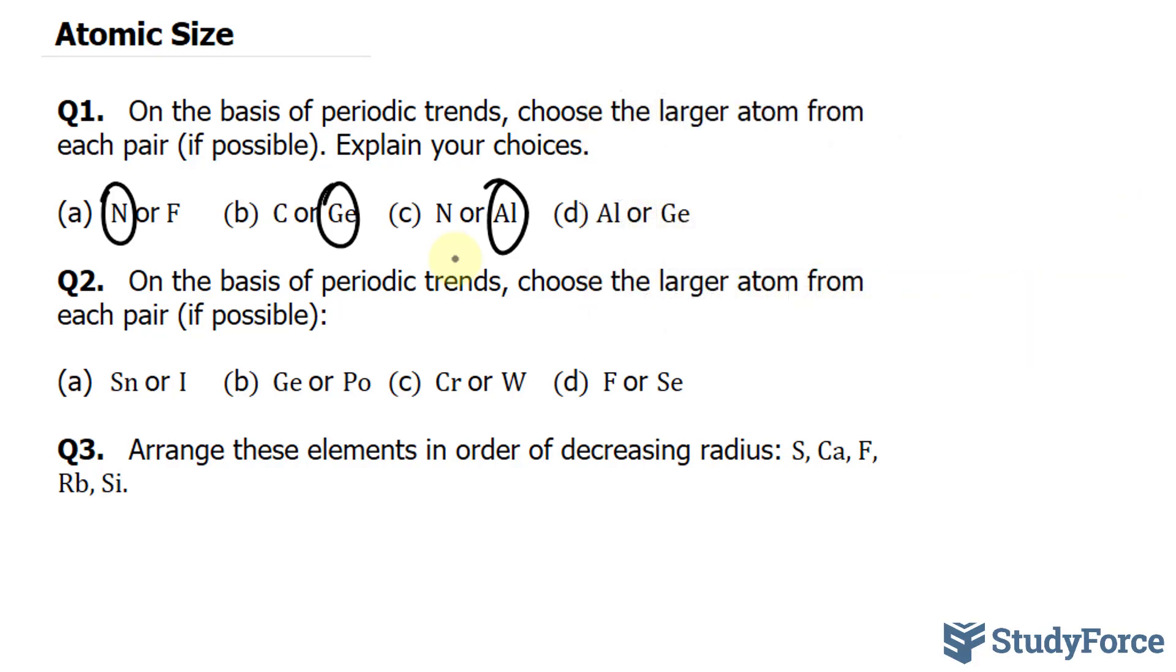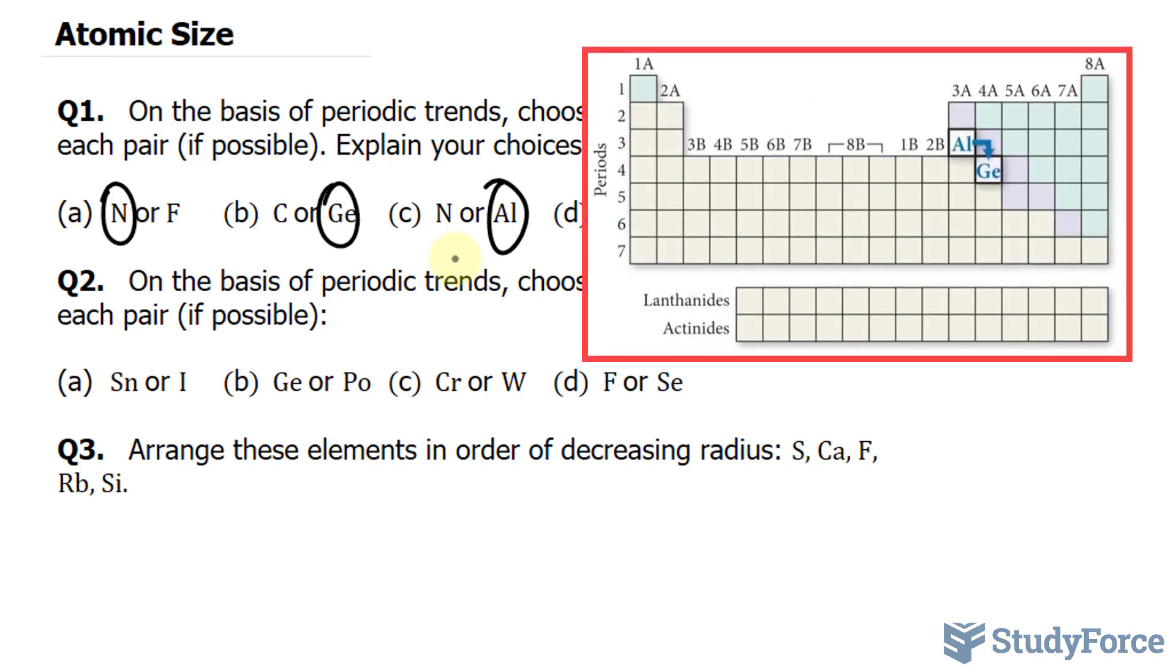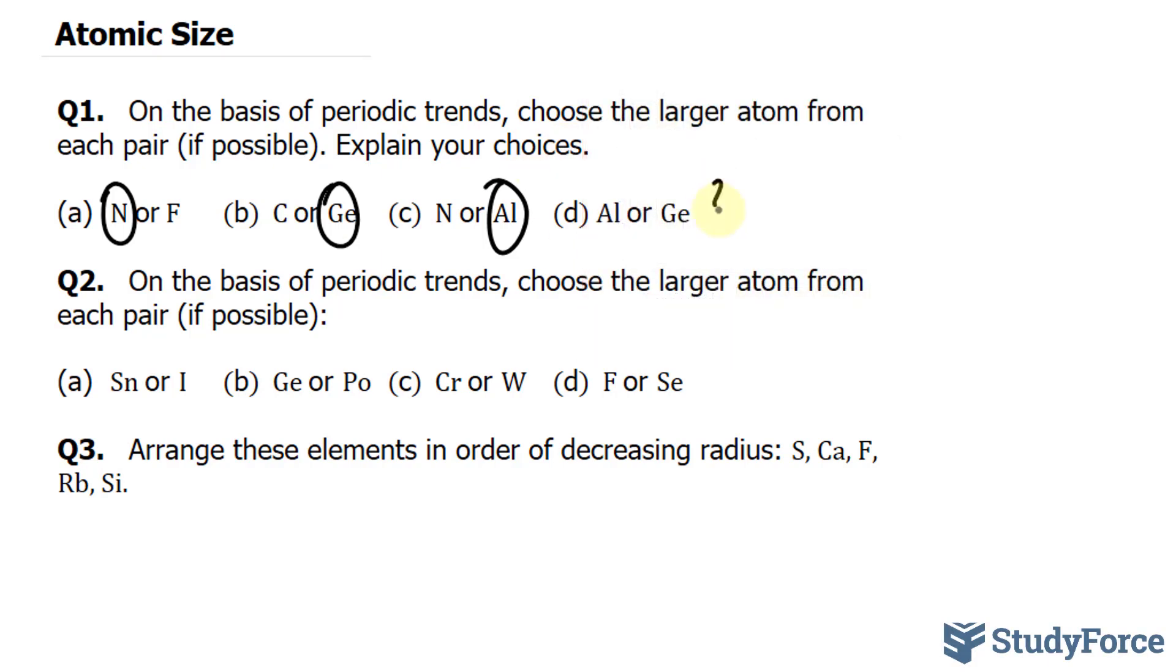And finally, in question D, we have to compare aluminum to germanium. This one is an ambiguous case. Based on the periodic trends alone, you can't tell which atom is larger. In fact, it goes down a column, but it also goes to the right across a row, which decreases atomic size. These effects tend to oppose each other, and it's not as straightforward to tell which one dominates the other in terms of its size. So this one is unknown.